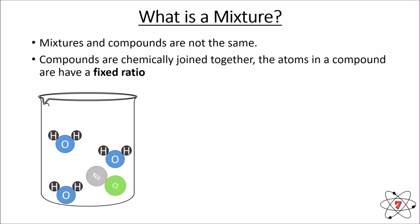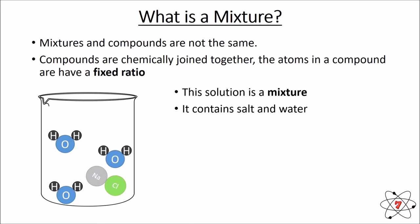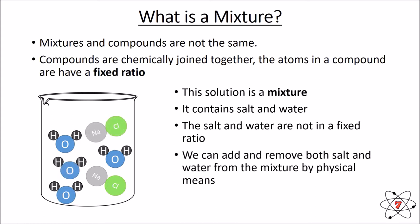If we mix salt and water together we make a mixture — sodium chloride solution. Sodium chloride solution is a mixture of the compound water and the compound sodium chloride. It is an impure substance because there is more than one substance in it. We call it a mixture because the salt and water are not in a fixed ratio — we can add and remove salt and water, changing their ratios by physical means, and we can separate the salt and water from each other by physical means.